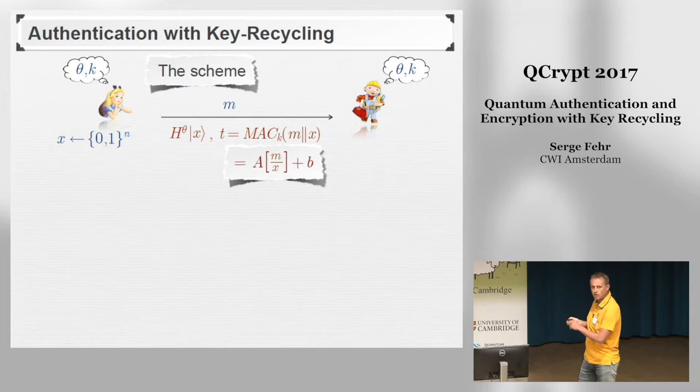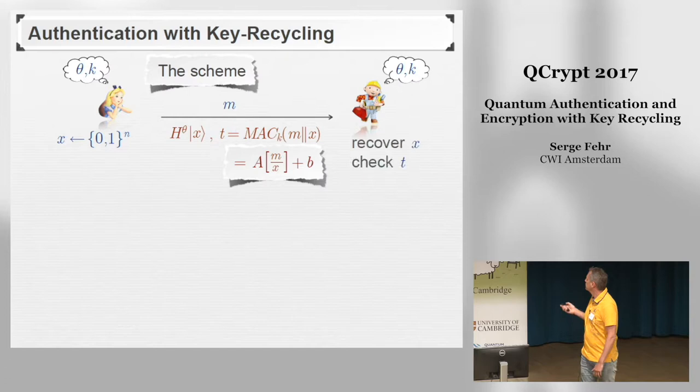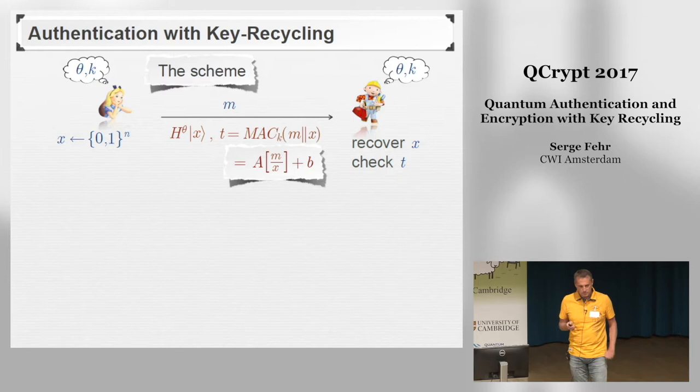M is the message that Alice wants to communicate to Bob in an authenticated way — we're just talking about classical messages. The only thing that is quantum here are these qubits. What Bob does is the obvious: he measures the qubits in the right basis to recover X, and then verifies the correctness of the tag. A very simple scheme.